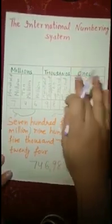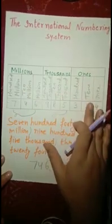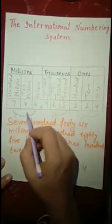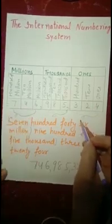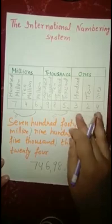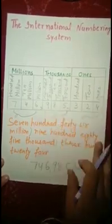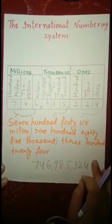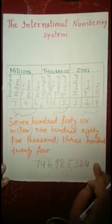The international system has three periods, and each period has three places. You put a comma after every three numbers. Starting from the right: three digits, put a comma; three digits, put a comma — and so on.